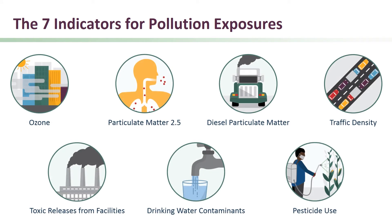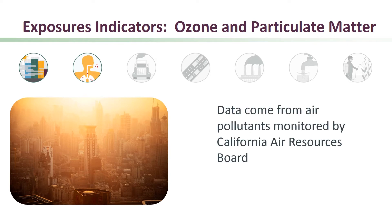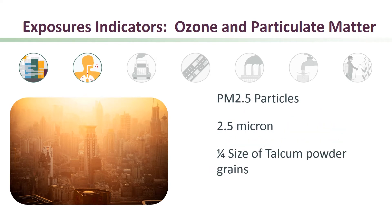First, we'll review the seven exposure indicators, which provide information about potential contact with pollutants. Air concentrations of two important and common air pollutants — ozone and particulate matter 2.5, or PM2.5 — come from air pollutants monitored by the California Air Resources Board. PM2.5 is particulate matter that is smaller than 2.5 microns in size; PM2.5 particles are about a quarter the size of talcum powder grains.